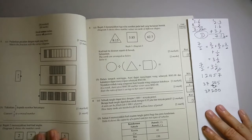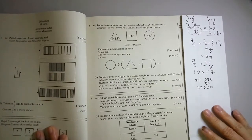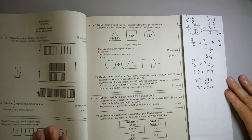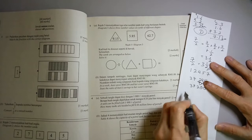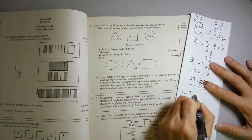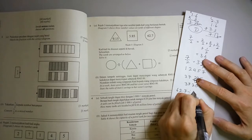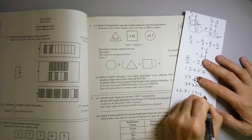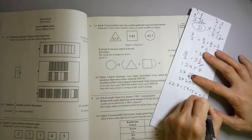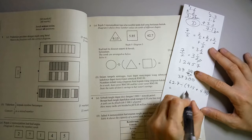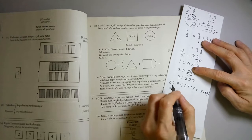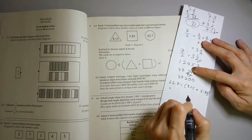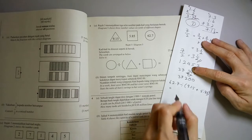Now let's look at question 3. Diagram 3 shows 3 number values on cards of different shapes. The cards are arranged as below. Solve it. So it's 62.7 divided by, in bracket, 9.15 plus 5.85. So what do you do first? Remember? Brackets first. Brackets, then only multiplication and division, and then only subtraction and addition.